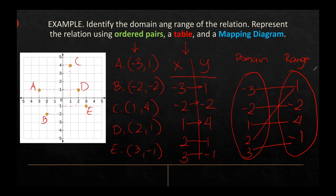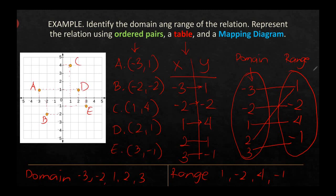The domain of this relation is {negative 3, negative 2, 1, 2, 3} and the range is {1, negative 2, 4, negative 1}. Using these details, we can represent this graph as an ordered pair, a table, and a mapping diagram.